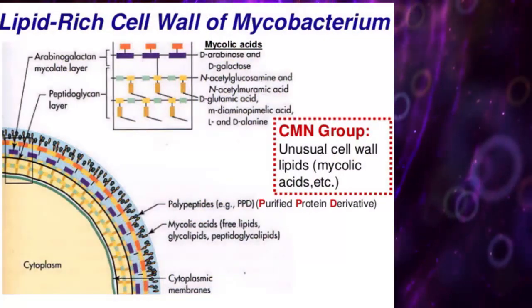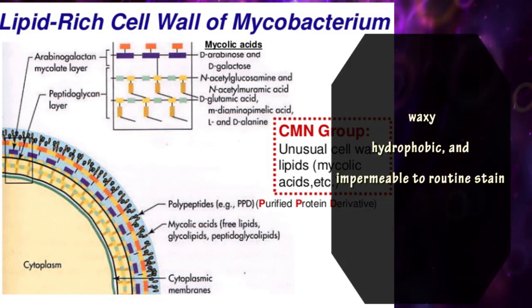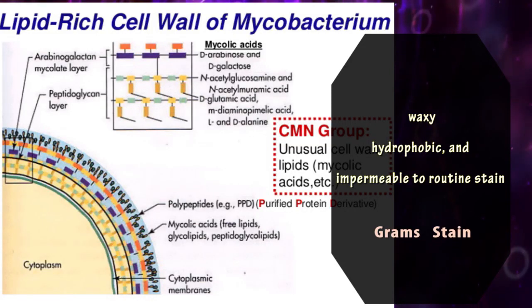The cell wall of Mycobacteria contain high concentration of lipid making them waxy, hydrophobic, and impermeable to routine stains, such as the Gram stain.